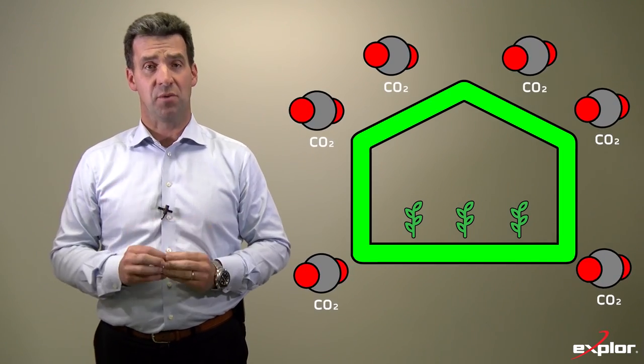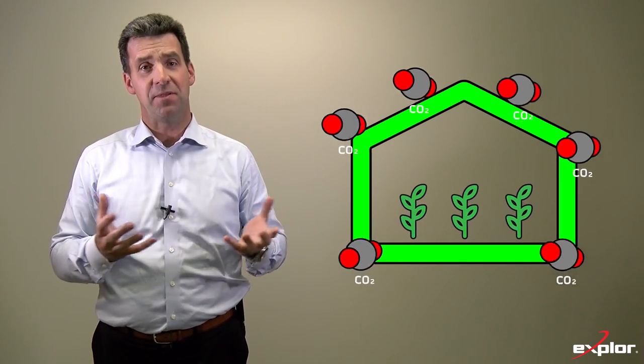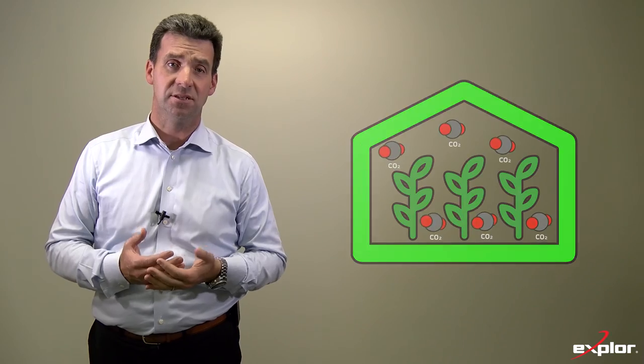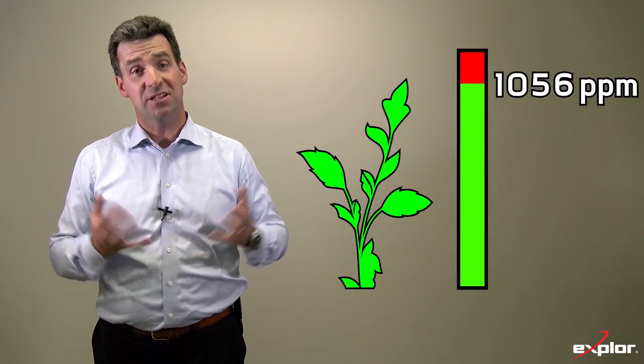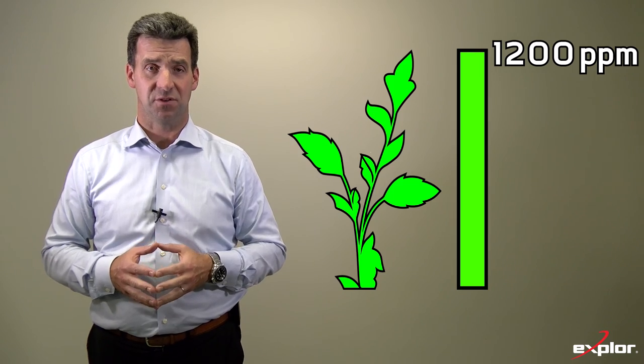Industrial greenhouses understand this very well. They often pump up the levels of CO2 in their greenhouses to 1,200 parts per million to help plants grow more quickly. That's three times more than our current atmospheric levels.